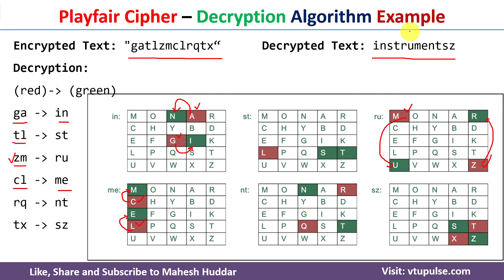This is how we can use the Playfair cipher to encrypt plaintext into ciphertext and decrypt ciphertext back into plaintext. I hope the concept of Playfair cipher is clear. If you like the video, do like and share with your friends. Press the subscribe button for more videos and the bell icon for regular updates. Thank you for watching.